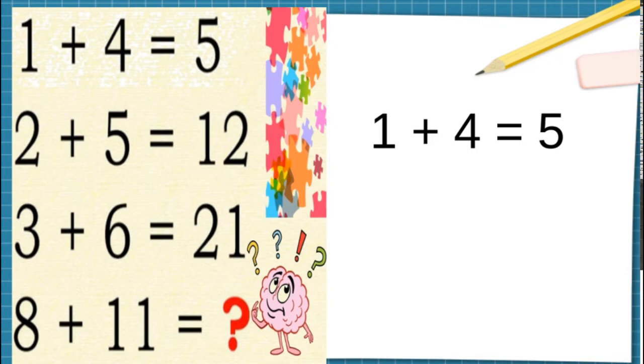there is a simple way. 1 plus 4 is equal to 5. So what's the way? The way is 1 into 4. So 1 plus 4 will become (1 × 4) + 1, the first number, equals 5.